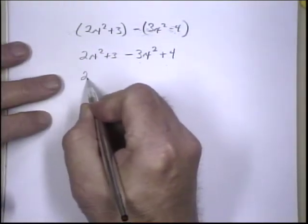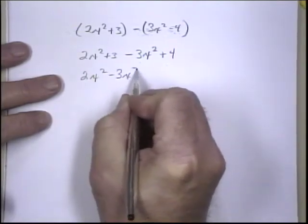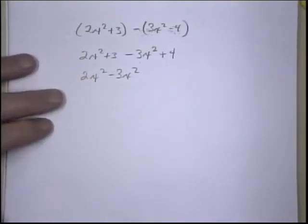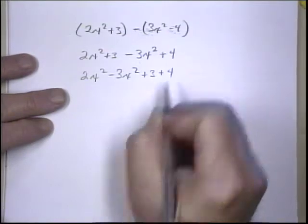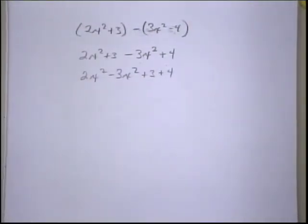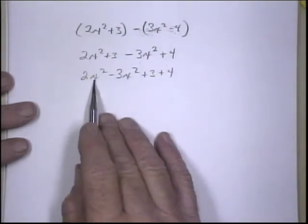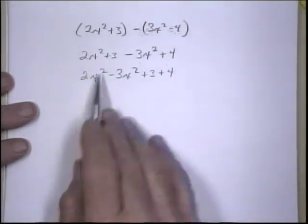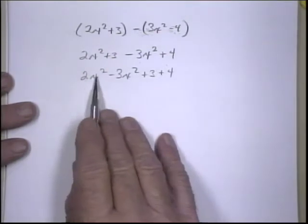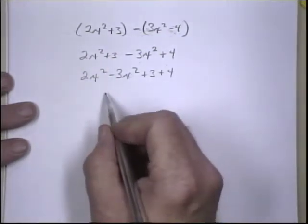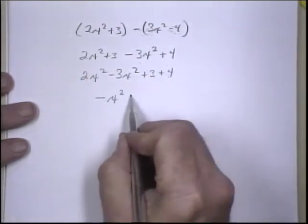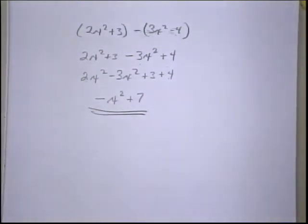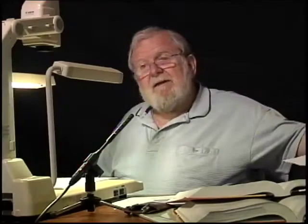Now I can combine like terms. I like to group these — once you've been doing this a while you don't have to, but when you're just learning it's helpful to group the like terms. Like terms are terms with the same variable raised to the same power. So we have 2x² minus 3x², which is minus x², and 3 plus 4 is plus 7. That was our answer — the same answer we got when we subtracted these vertically.